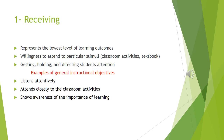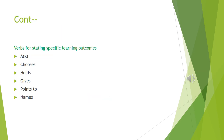Receiving is the lowest level of affective domain, as it represents the lowest level of learning outcomes. Receiving is the students' willingness to attend to particular stimuli or phenomena. It is concerned with getting, holding, and directing students' attention. Examples of general instructional objectives at receiving level include: listens attentively, attends closely to classroom activities, and shows awareness of the importance of learning. Verbs for stating specific learning outcomes include: asks, chooses, holds, gives, points to, and names.